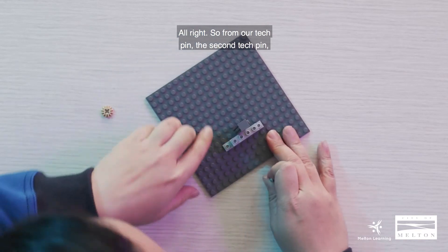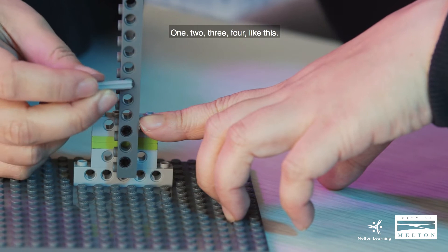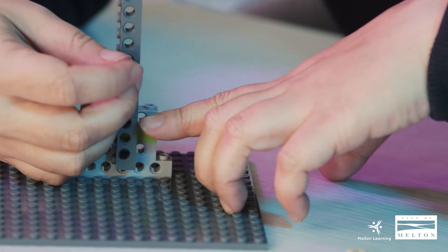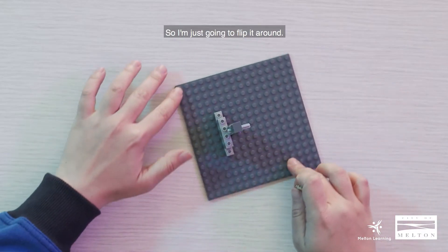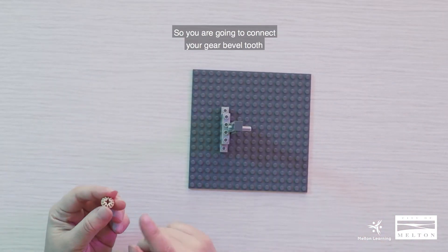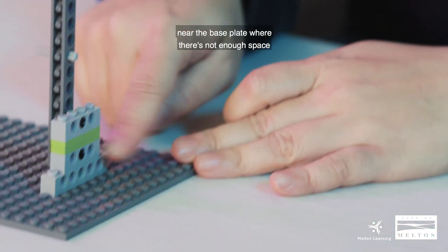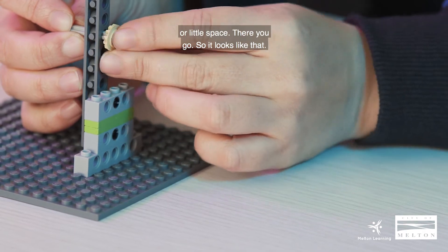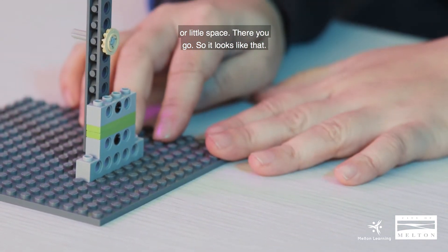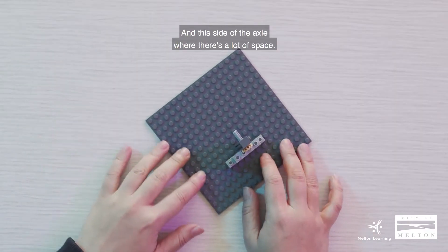From our tech pin, the second tech pin, we'll place it on the fourth hole. One, two, three, four like this. So I'm just going to flip it around. So you are going to connect your gear bevel tooth near the base plate where there's not enough space or little space. And this side of the axle where there's a lot of space.